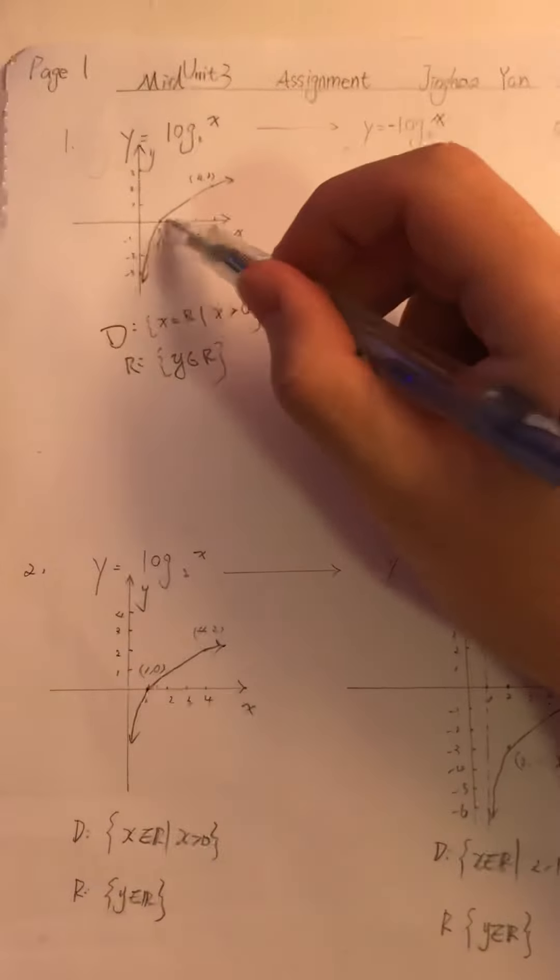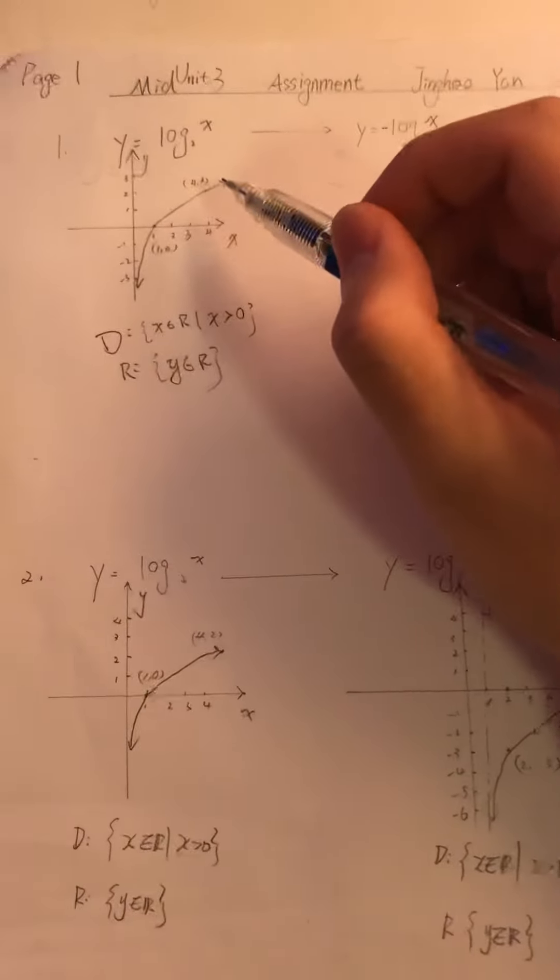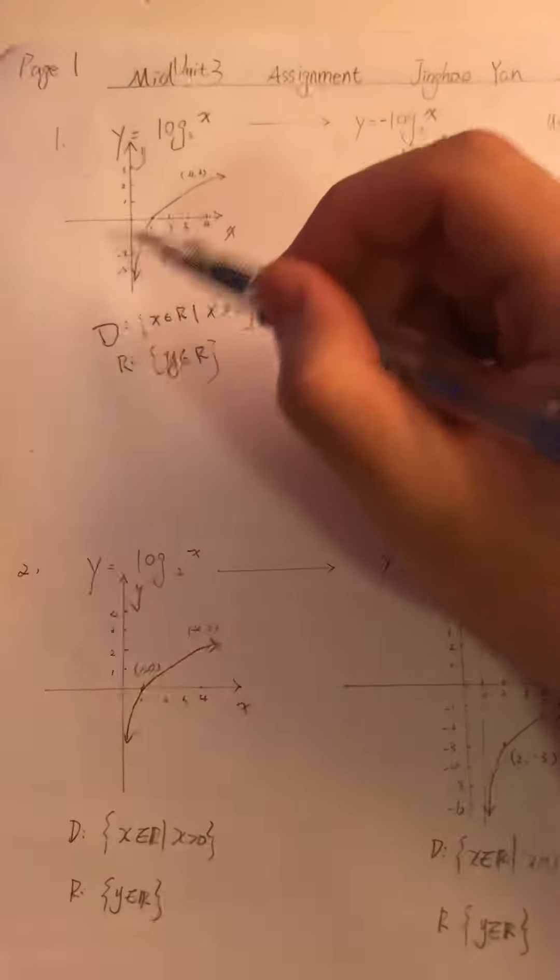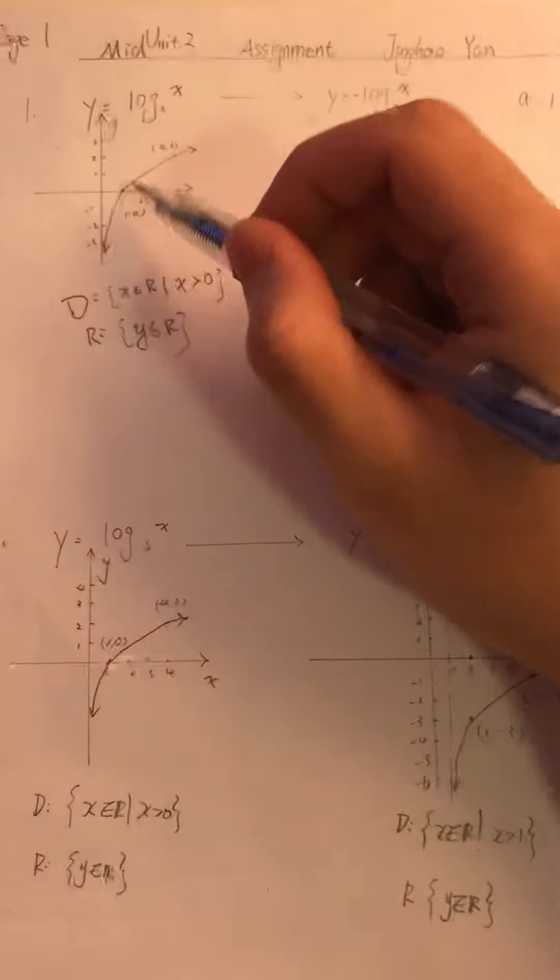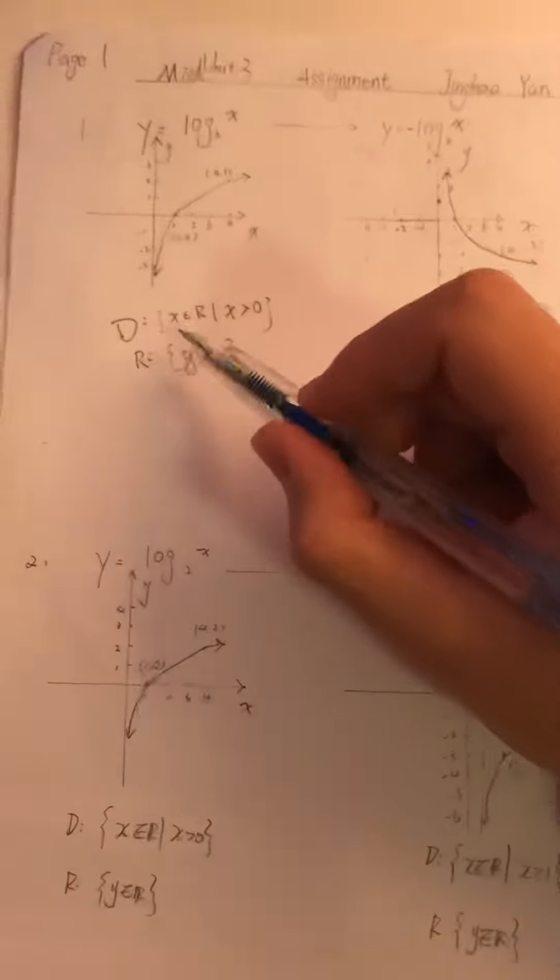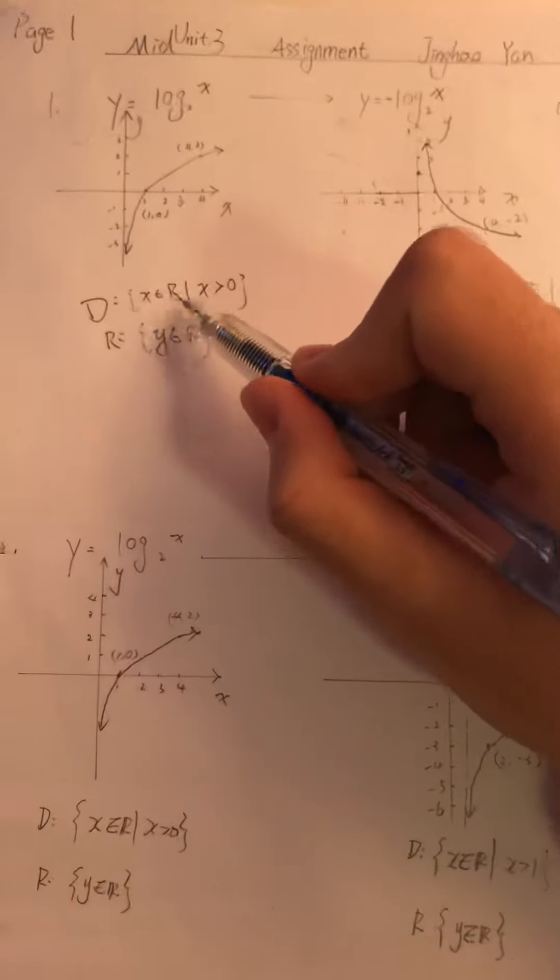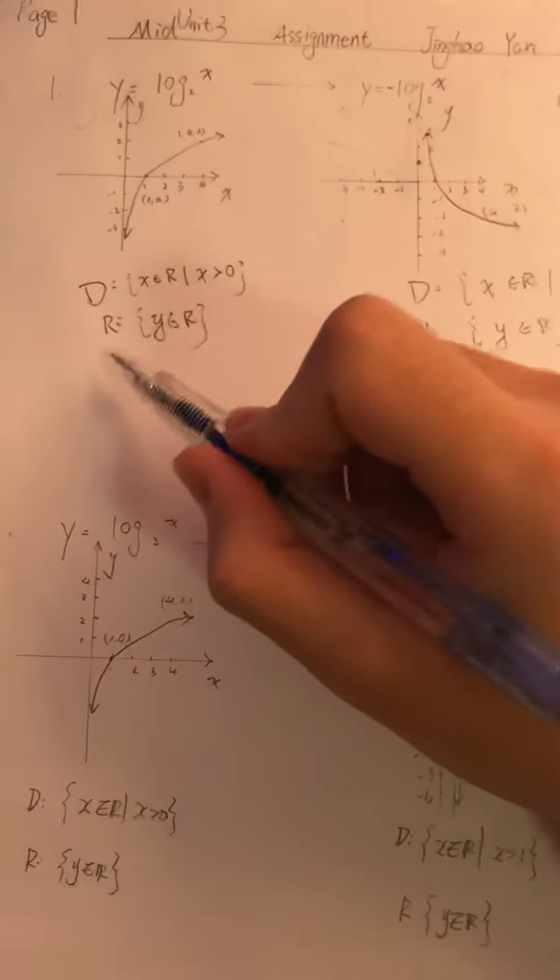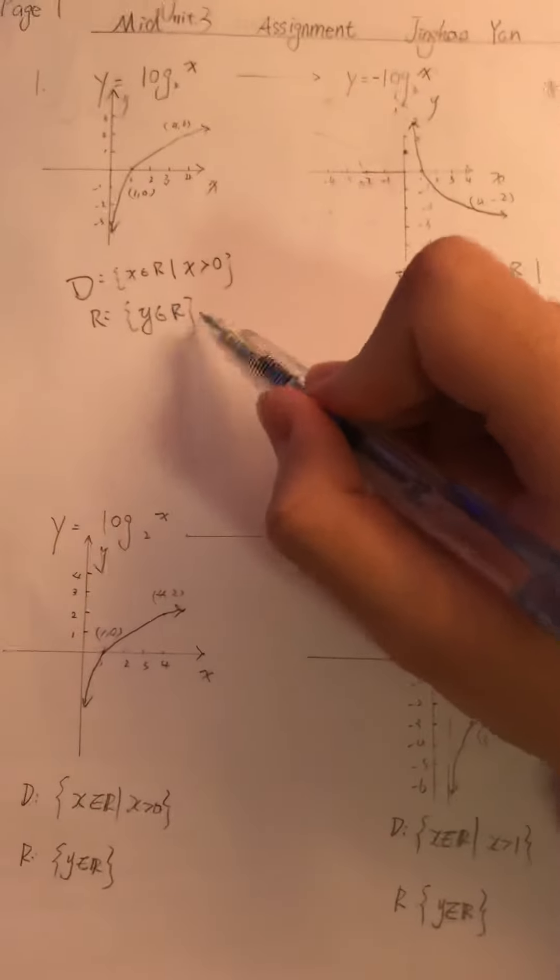You can see the original diagram here, and it has two points, which is (4, 2) and (1, 0). And the domain is x belongs to real numbers and greater than 0. The range is y belongs to real numbers.